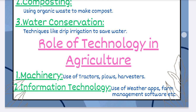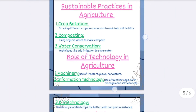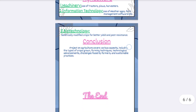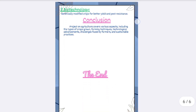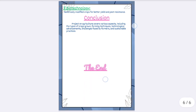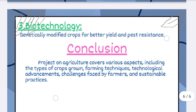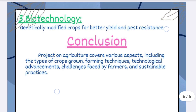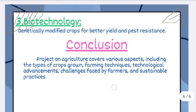Role of technology in agriculture: under it, number one, machinery; number two, information technology; and the last one on the next page is biotechnology. The last topic is the conclusion.